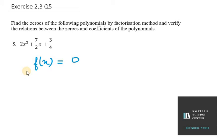Hello everyone, let's start with question number 5. We are given 2x squared plus 7 over 2x plus 3 over 4. First of all, we need to find the zeros of the following polynomial.